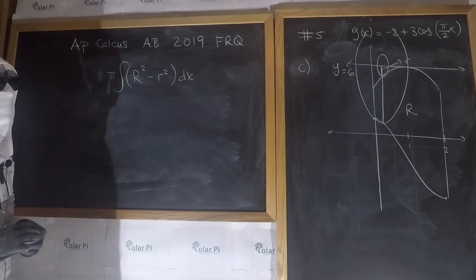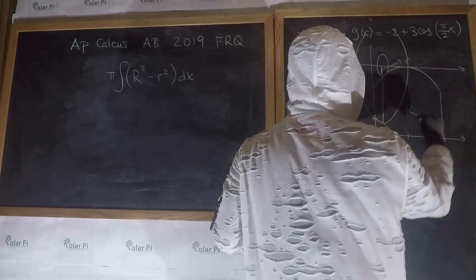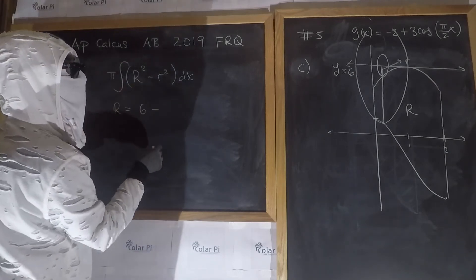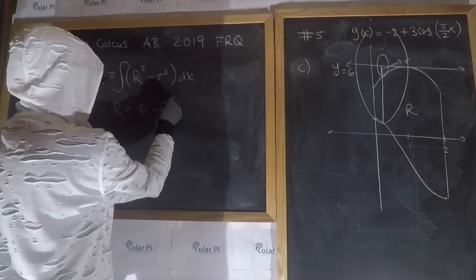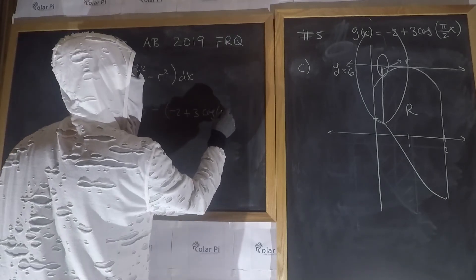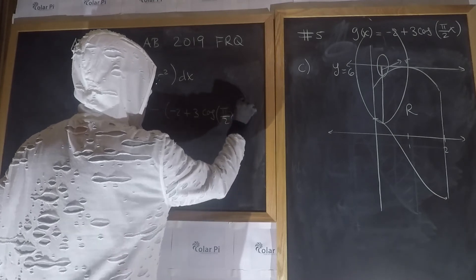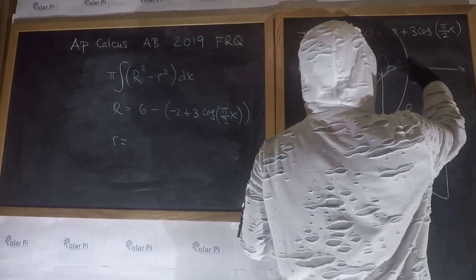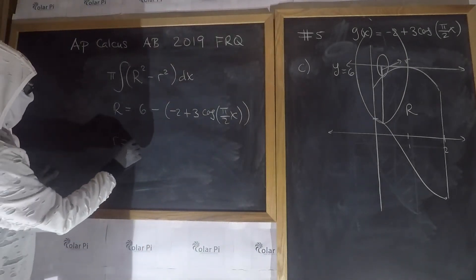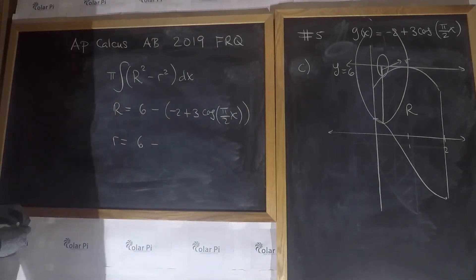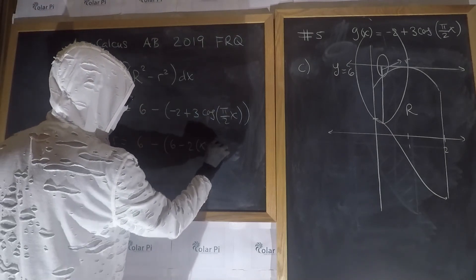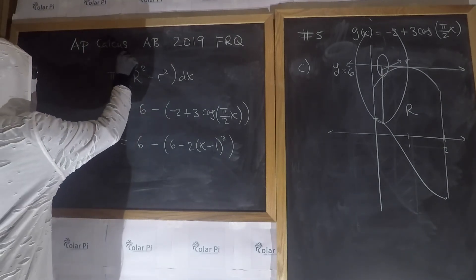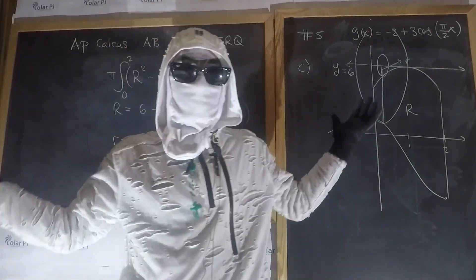Now, what is big R? Big R is this y value minus this y value, so big R is equal to 6 minus the cosine function, which is negative 2 plus 3 cosine of pi over 2x. And little r, on the other hand, is 6 minus the quadratic, so it's 6 minus 2 times x minus 1 squared. And you actually don't have to do this, we're going from 0 to 2. It just says find an expression, so that's that. Keep watching, take care.